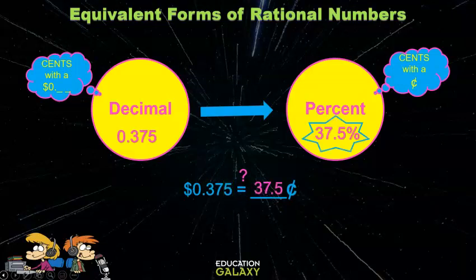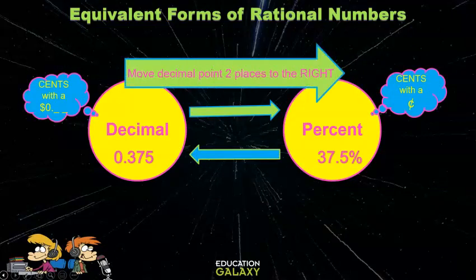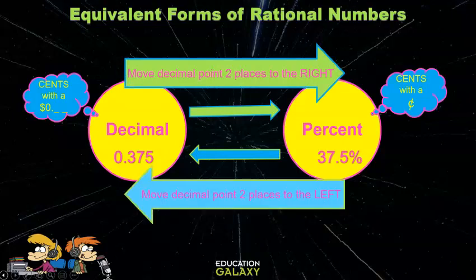Then put a point five for that half a cent. For you guys that like rules, to write a decimal as a percent, you move the decimal point two places to the right, and to write a percent as a decimal, you move the decimal point two places to the left.